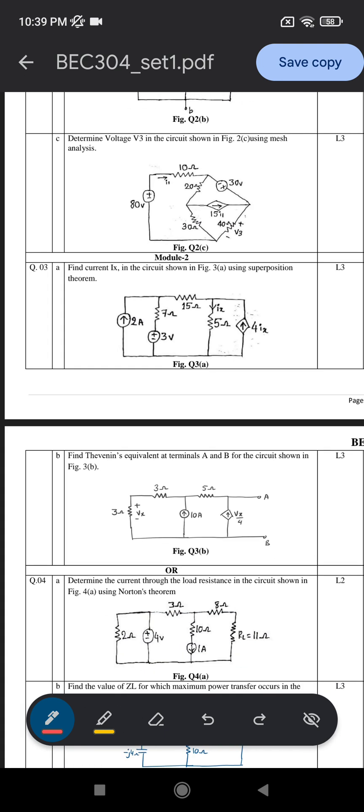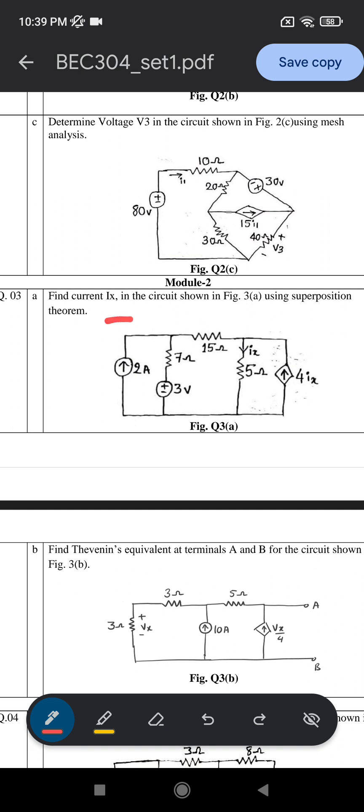The very first question is: find the current Ix in the circuit shown in the figure using superposition theorem. You're going to find the current Ix flowing in the five ohm resistor. Whatever questions we discussed in the last session with respect to superposition theorem, you're going to work on these questions based upon the current flowing through the resistor using superposition theorem.